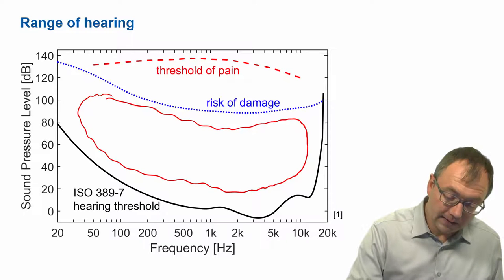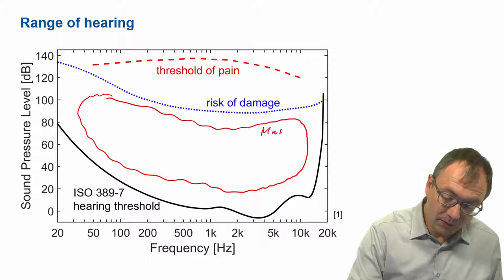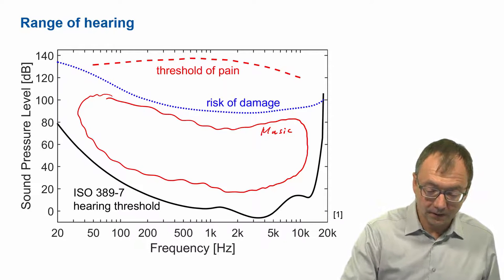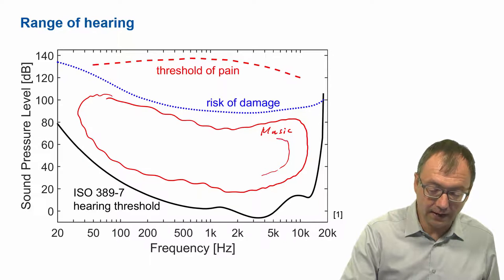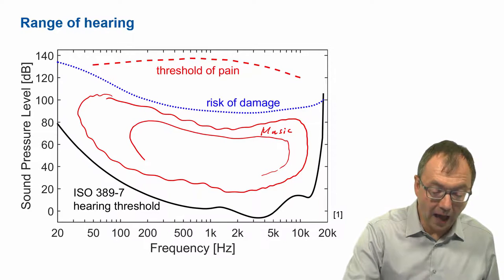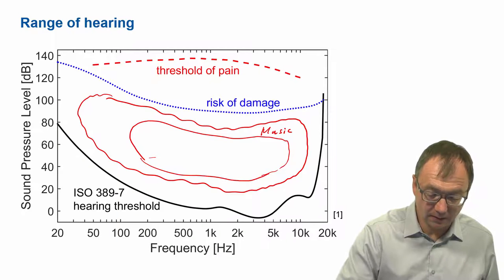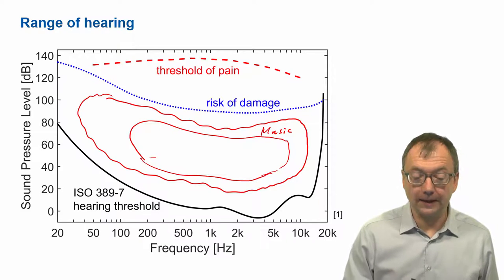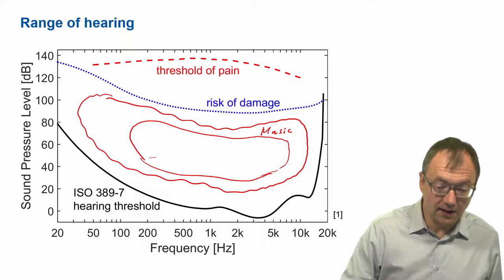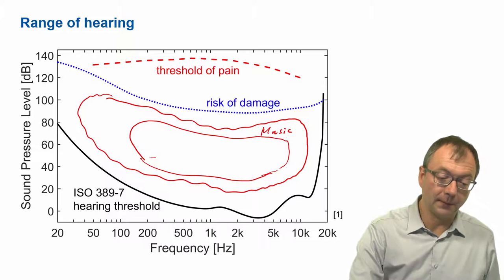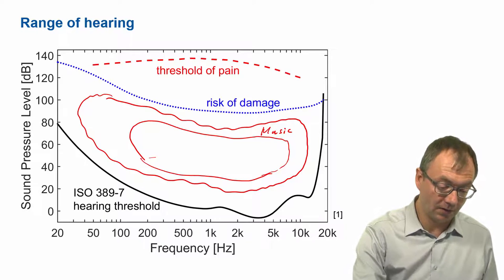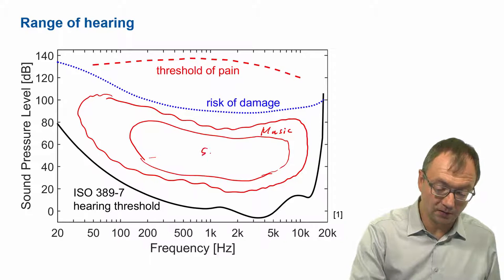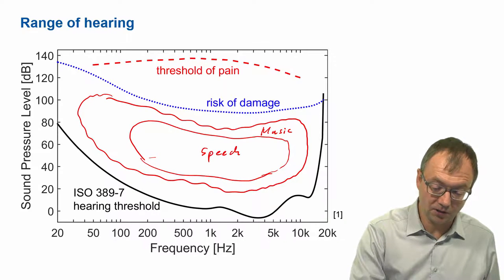That's the range for music. The range for speech is a bit more limited. It goes up to 5, 7, 8 kHz, but not below 100 Hz. When you're speaking, you have harmonic sounds in the vowels that can have a fundamental frequency going down to about 100 Hz, and for female voice about 200 Hz. And we call this the range for speech.